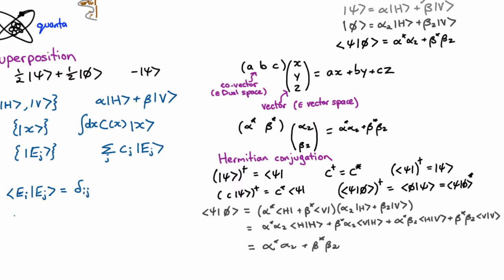For a continuous index, it works very similarly, except of course we can't use the Kronecker delta, we have to use the Dirac delta.